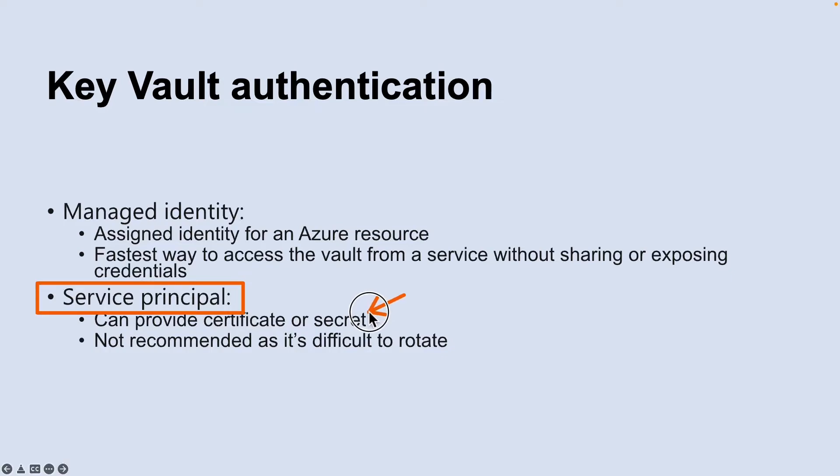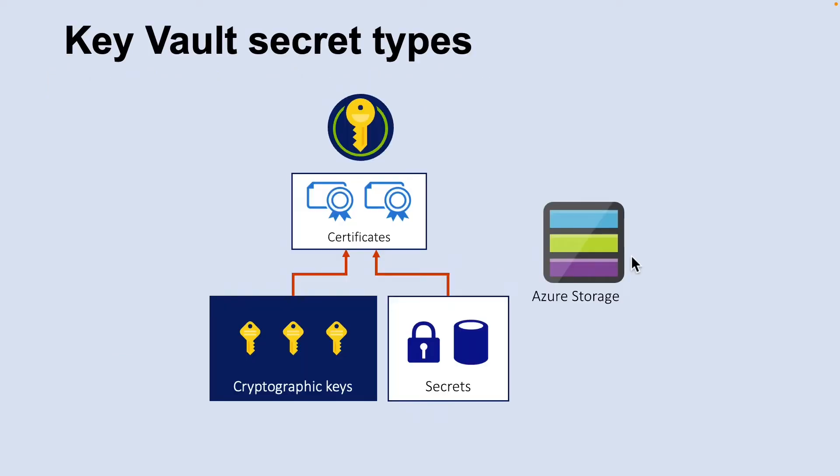The second non-recommended option is service principal with a secret. Although you can use a service principal and a secret to authenticate to Key Vault, Microsoft does not recommend this either. It is hard to automatically rotate the bootstrap secret that is used to authenticate to Key Vault.